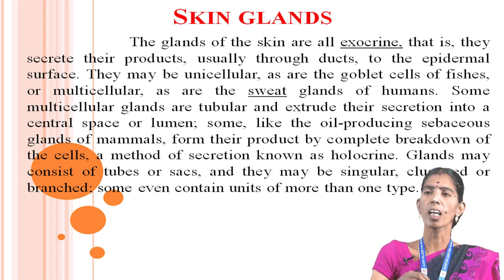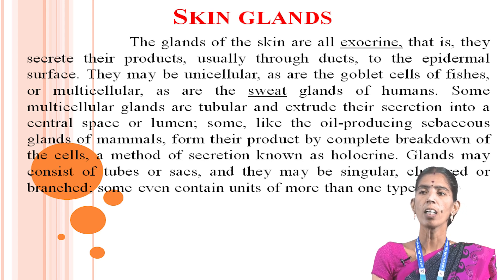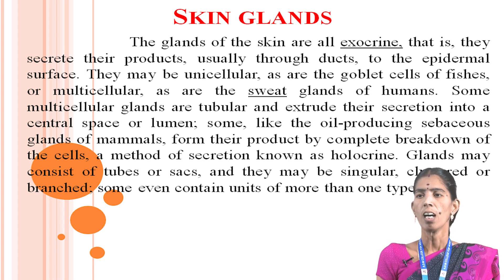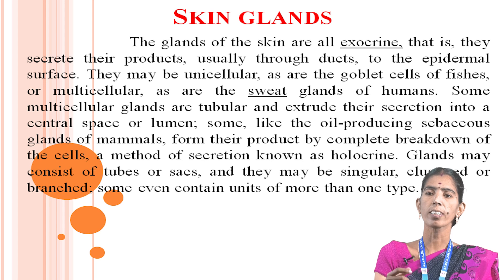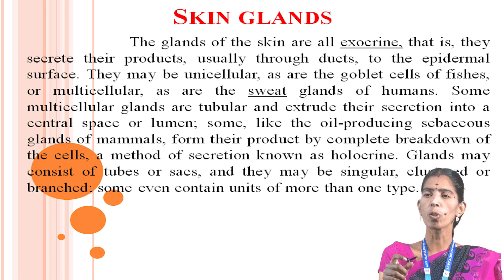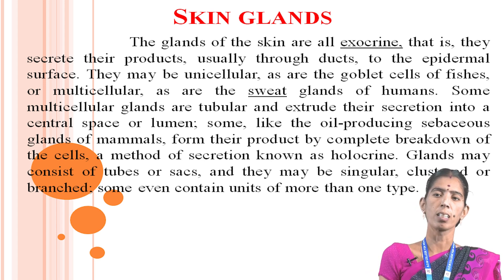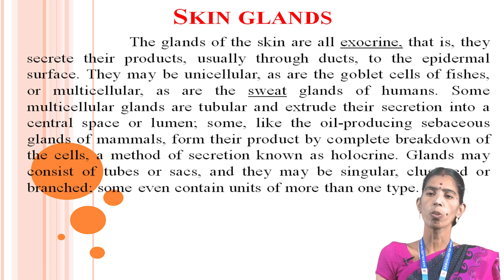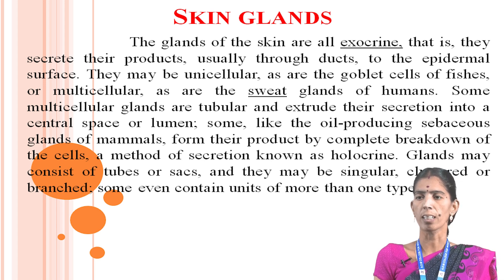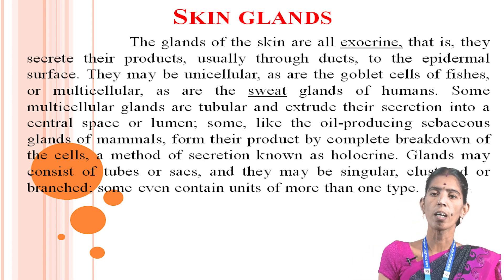Then skin glands. The glands of the skin are all exocrine — that is, they secrete their product usually through ducts to the epidermal surface. They may be unicellular or multicellular, as are the sweat glands of humans. The multicellular glands are tubular and extrude the secretion into a central space or lumen. Some, like the oil-producing sebaceous glands of mammals, form the product by complete breakdown of the cells — a method of secretion known as holocrine. Glands may consist of tubes or sacs, and they may be singular, clustered or branched.